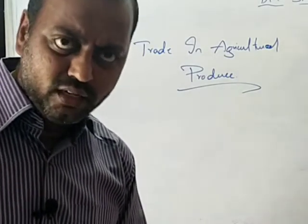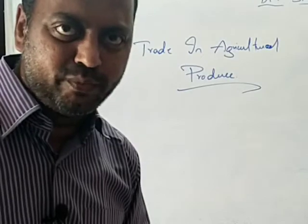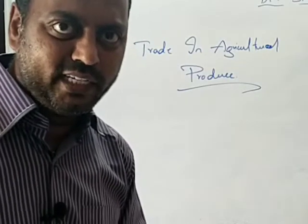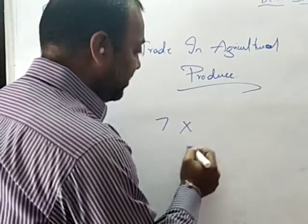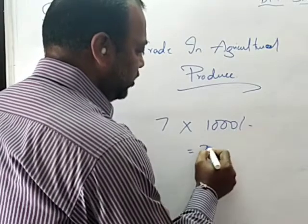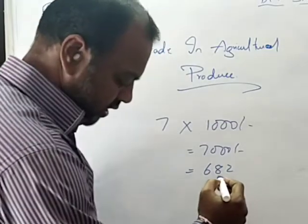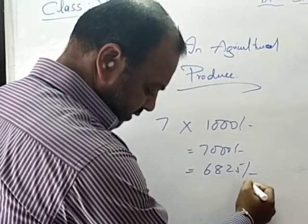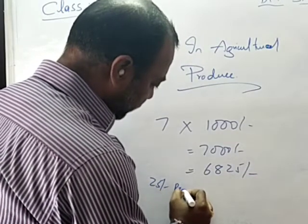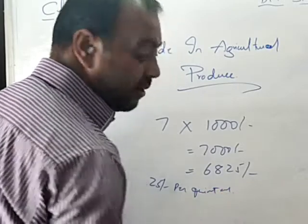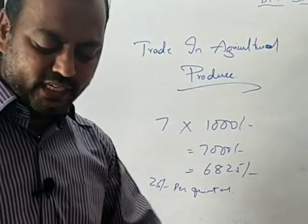Actually, how much should have been given to her? 7 quintals at 1,000 rupees per quintal means she should have received 7,000 rupees. But she received only 6,820 rupees. This is because the broker deducted 25 rupees per quintal as brokerage commission — so 25 rupees multiplied by 7 quintals was deducted from her payment.